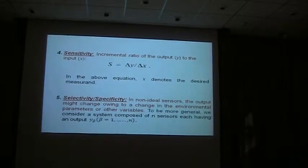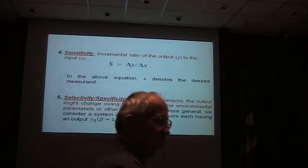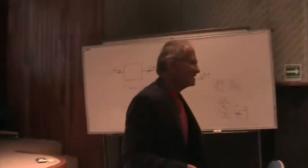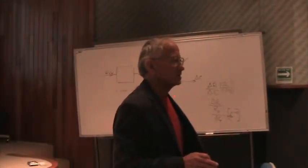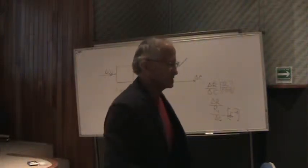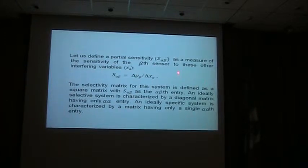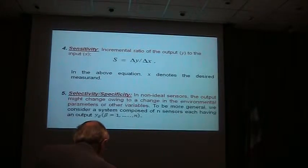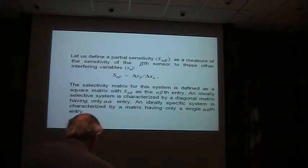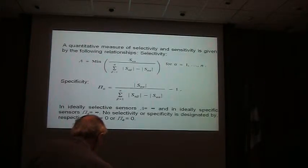In a non-ideal sensor, the output might also change due to environmental factors. We don't want our sensor to respond to environmental factors — we have to suppress the influence of humidity on the output signal. Using some algebra, we can calculate the partial sensitivity and obtain a quantitative measure of selectivity and sensitivity.